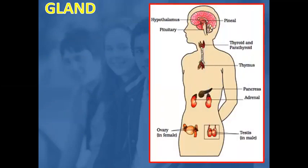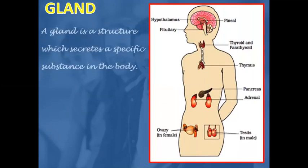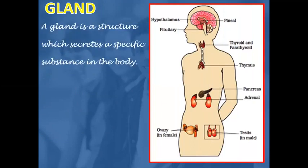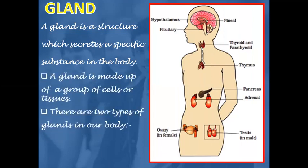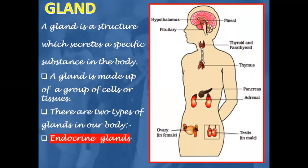A gland is a structure which secretes a specific substance in the body. A gland is made up of a group of cells or tissues. There are two types of glands in our body: endocrine glands and exocrine glands.